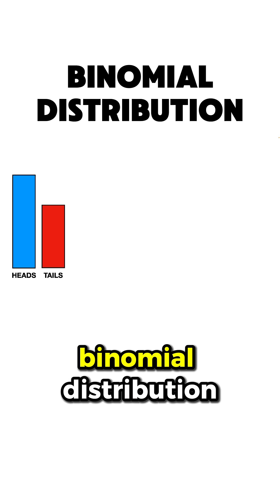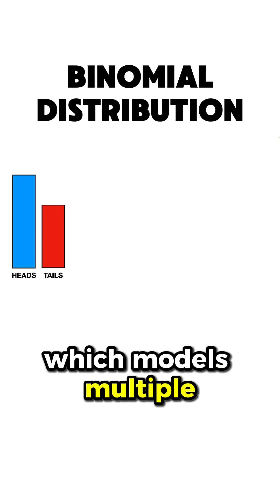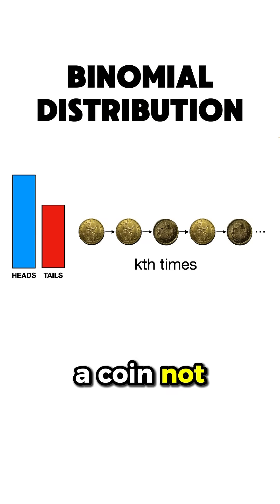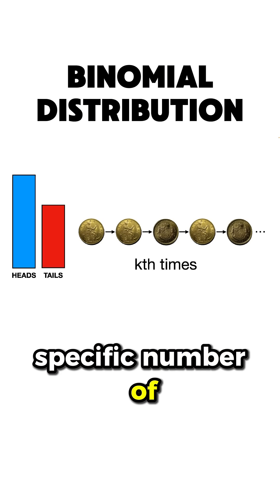Building on that, we have the binomial distribution, which models multiple independent Bernoulli trials. Suppose we flip a coin not just once, but say 10 times, and we want to know the probability of getting a specific number of heads.